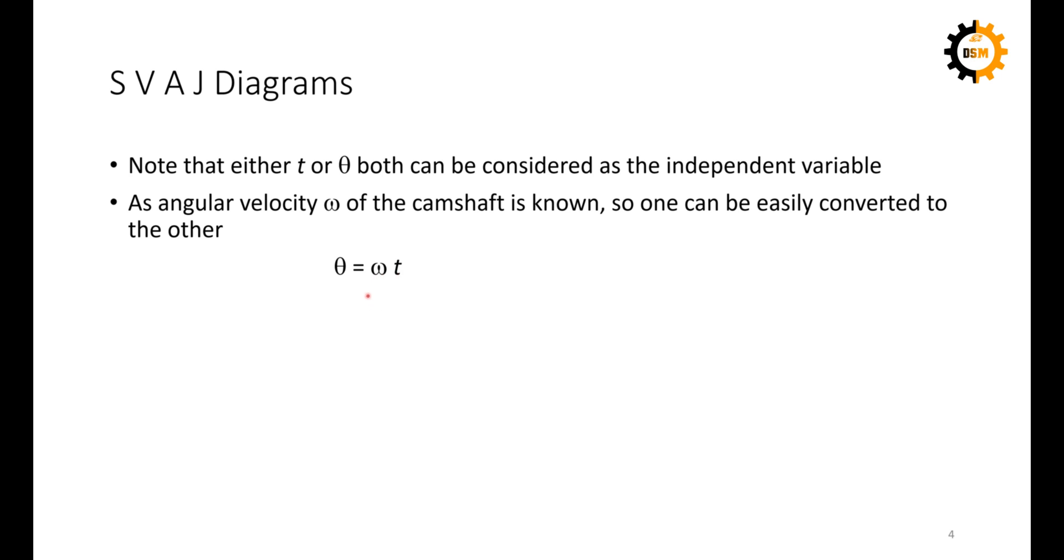So if the angular velocity is constant, if we use theta or time, it doesn't matter. If you are using time, we have to input the omega. And if you are using theta, you can directly plot it, and after you have plotted it, you can multiply it with omega or divide by omega depending on which independent variable you have used, and you can draw it. So if you are making a profile, this can be even in degrees, like 30 degrees or 60 degrees or 90 degrees.